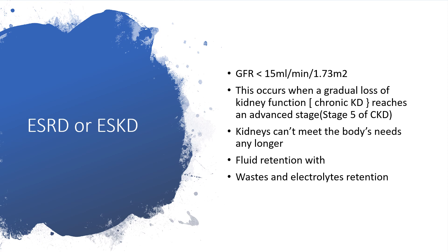We have now reached the last stage: end-stage renal disease, determined by an estimated glomerular filtration rate of less than 15 ml per minute per 1.73 m². Some call it stage 5 of chronic kidney disease. This occurs when a gradual loss of kidney function reaches an advanced stage where the kidneys can no longer meet the body's needs, resulting in fluid, waste, and electrolyte retention.